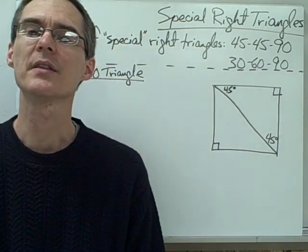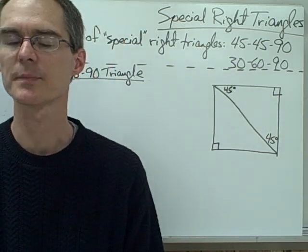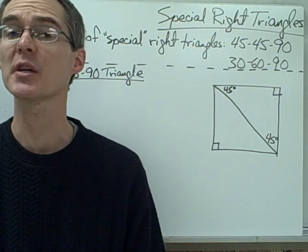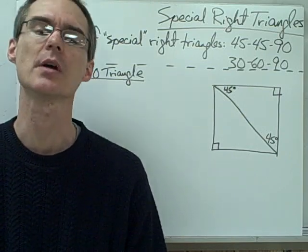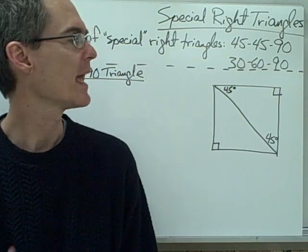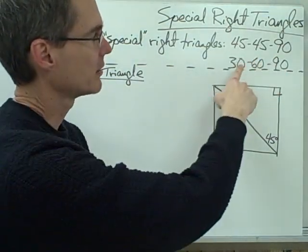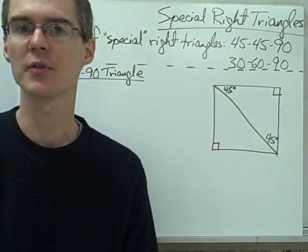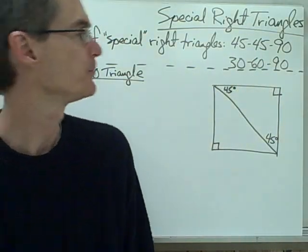In this video we're going to be talking about the special right triangles. The special right triangles are just special because they show up a lot — we see them in a lot of different types of geometric problems. There are two types: the 45-45-90 triangle and the 30-60-90 triangle, and they're named by the size of the angles in the triangle.